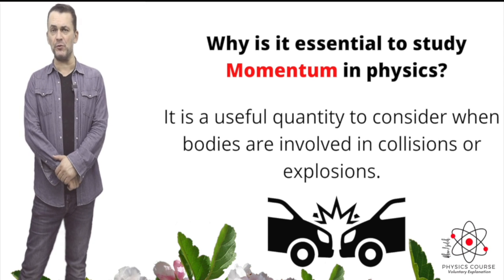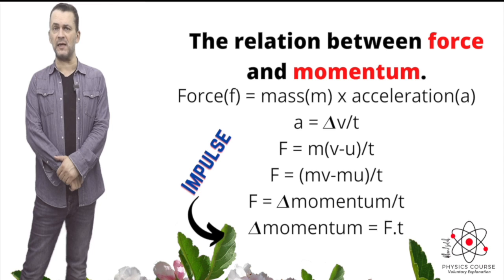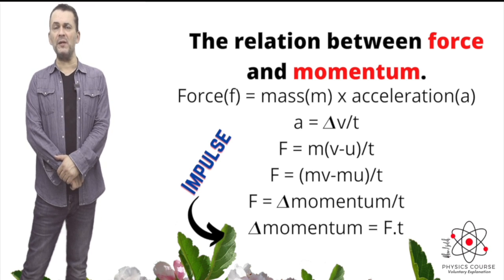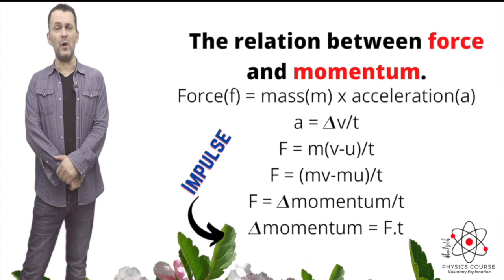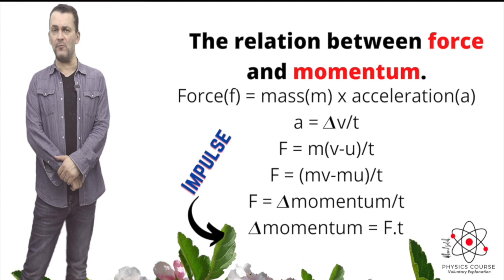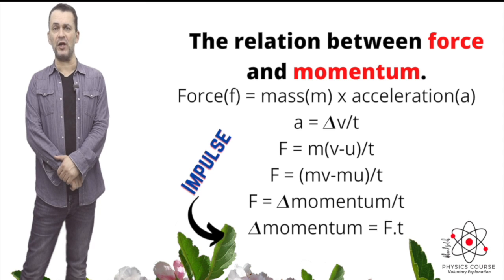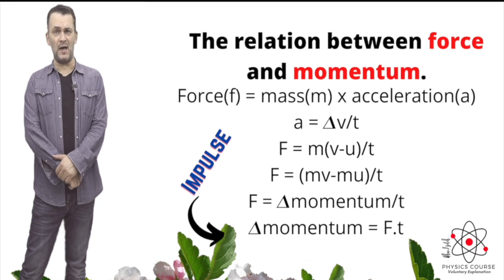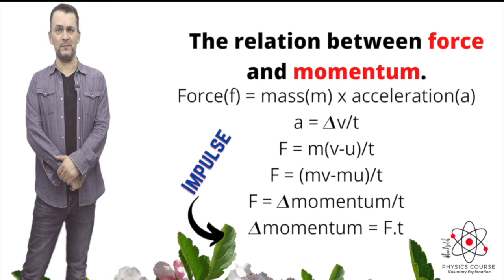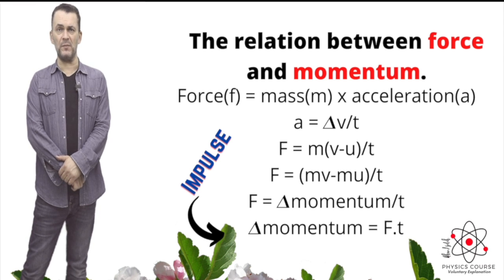From Newton's second law, any force equals mass times acceleration. If we have an acceleration acting on a body, force equals mass times acceleration. Using the equations of motion, acceleration equals change in velocity divided by time. So force equals mass times change in velocity divided by time. Mass times change in velocity gives you change in momentum, so force equals change in momentum divided by time. This is actually Newton's own definition of force — the rate of change in momentum.